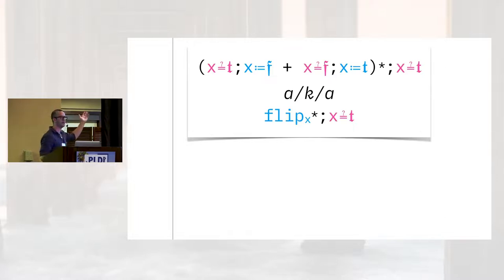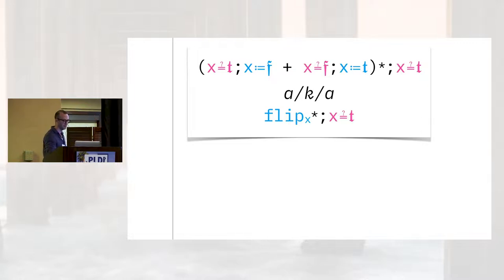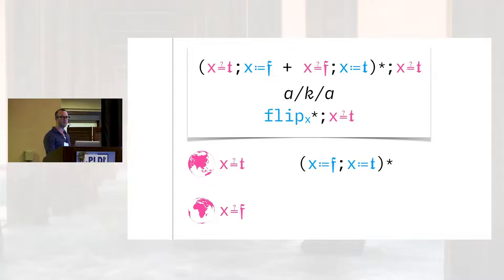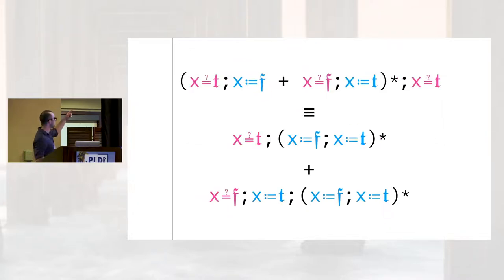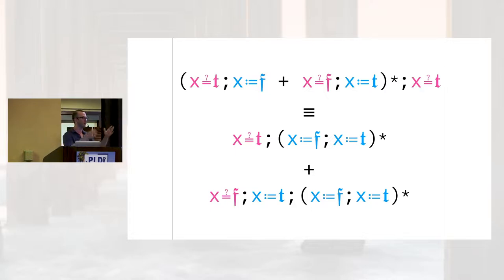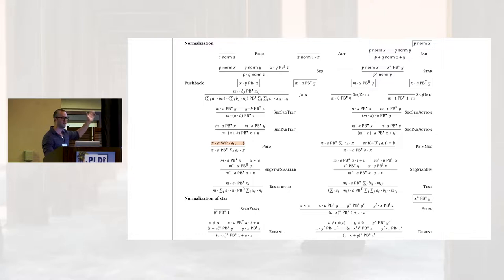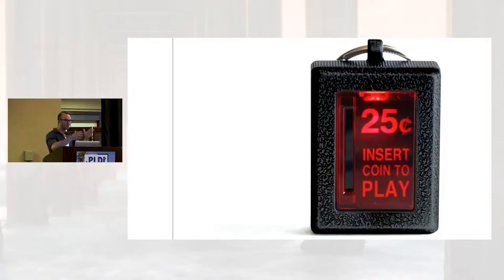Here's a pretty simple program: it flips a bit some number of times and then asserts that the bit is true. When it starts out, the bit is either true or false — two worlds. If you start in the true world, you flip it an even number of times; if you start in the false world, you flip it an odd number of times. Your original term is equal to a transformed one where all the tests are at the front, which lets us use cool stuff from Kleene algebra and regular languages to do word equivalence on the actions, and then decide equivalence.